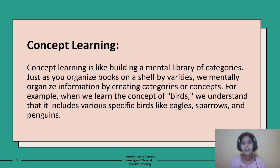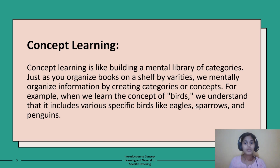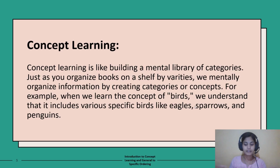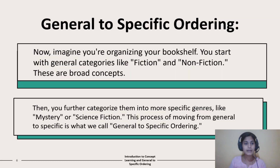You create a shelf named 'Eagle' with all information about eagles, and another shelf named 'Sparrow' with all information about sparrows. That's how general concept learning works — it's like building a mental library where all books are organized in their own shelves, making it easy to access all that information.